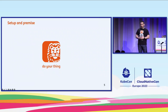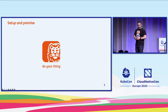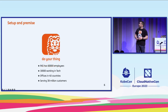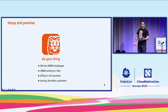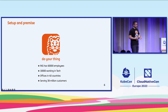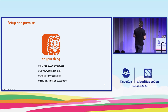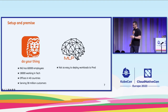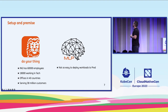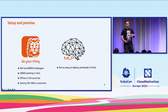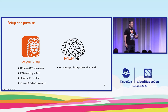Our premise takes place at ING. ING is one of the world's biggest banks, definitely the biggest in the Netherlands. It has around 60,000 employees, 18,000 of them work in tech offices in around 40 countries, serving around 38 million customers. This is the case in many environments, but especially banks, since we work in a highly regulated environment subject to rigorous policies in terms of risk, security, and change management controls.